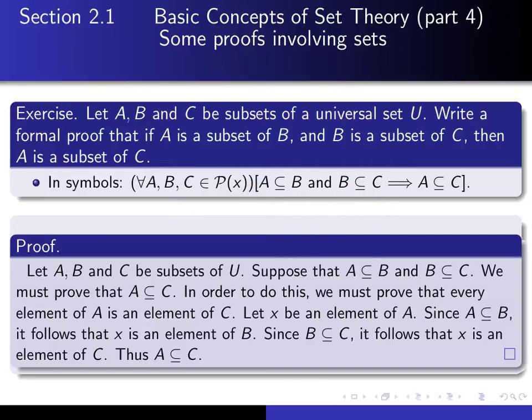Now, in this sentence, I'm going to warn the reader what it is I'm intending to do. I say, we must prove that A is a subset of C. And I describe how I'm going to do that. In order to do this, we must prove that every element of A is an element of C. And so now I go ahead and do that. I say, let X be an element of A.